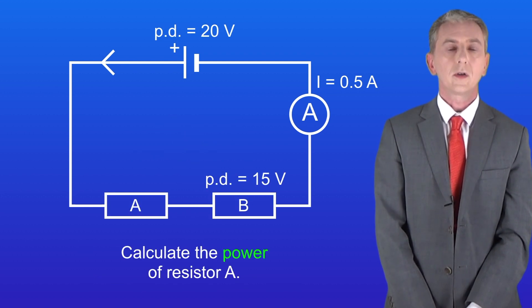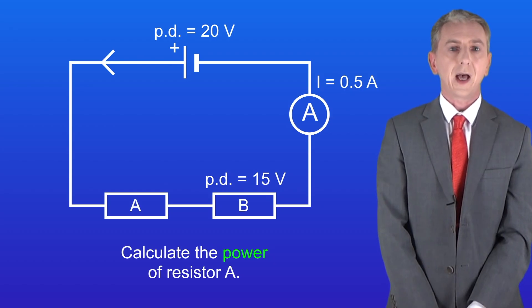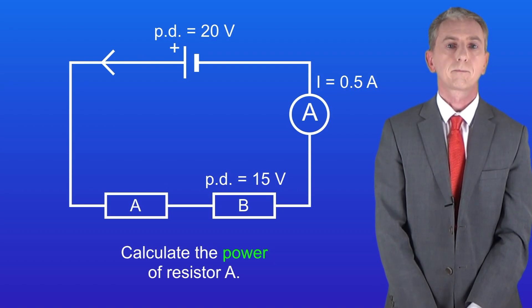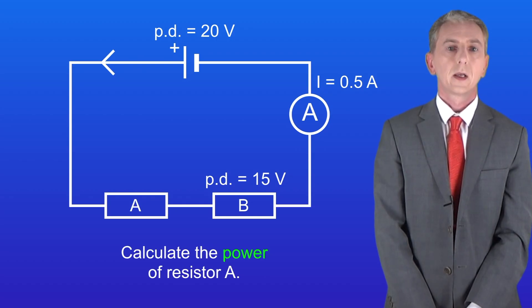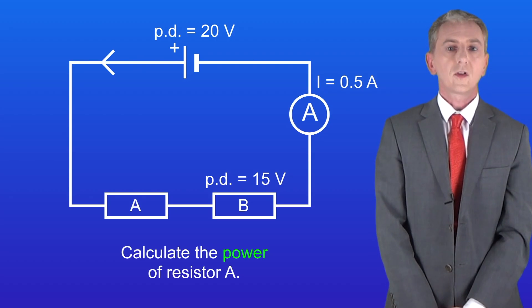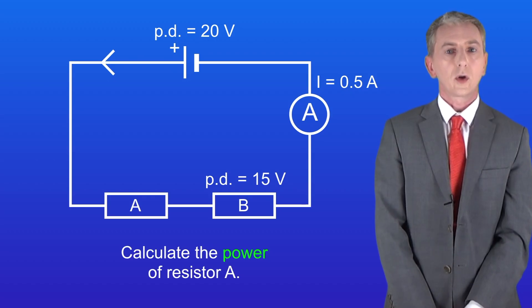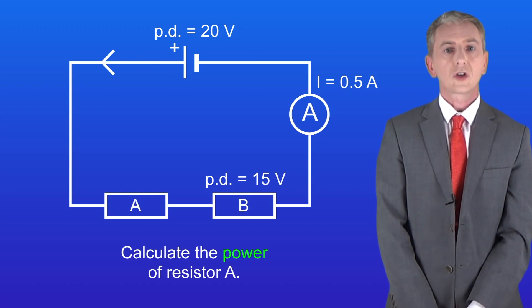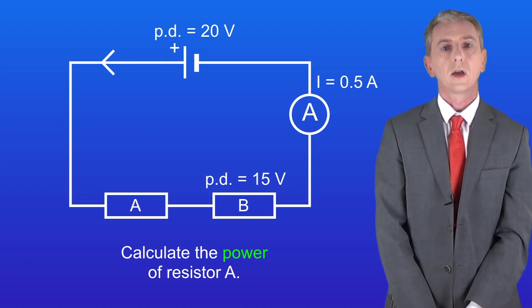Here's another question for you: calculate the power of resistor A. Pause the video and try this yourself. In this circuit we've got two resistors in series. The first thing we need to do is work out the potential difference across resistor A. Remember that potential difference is shared between components in series.